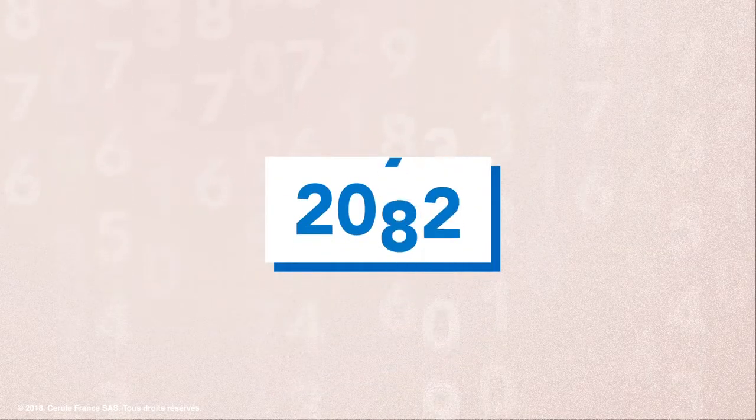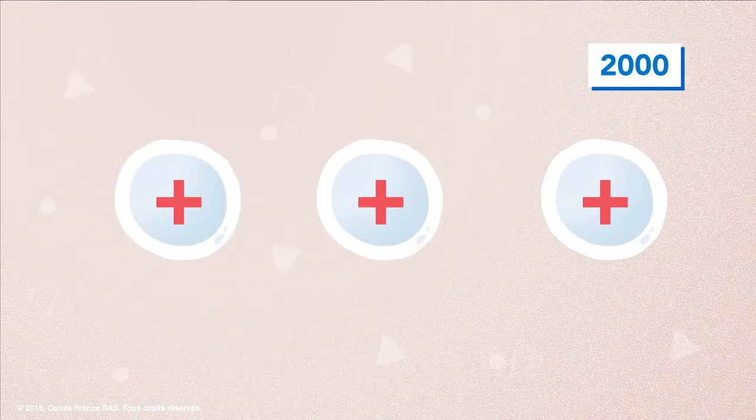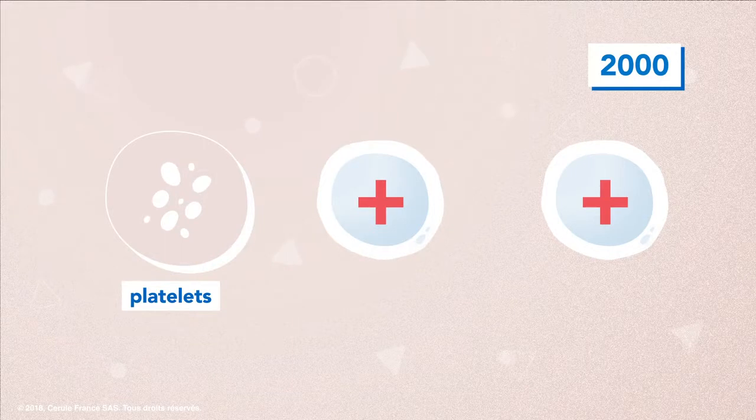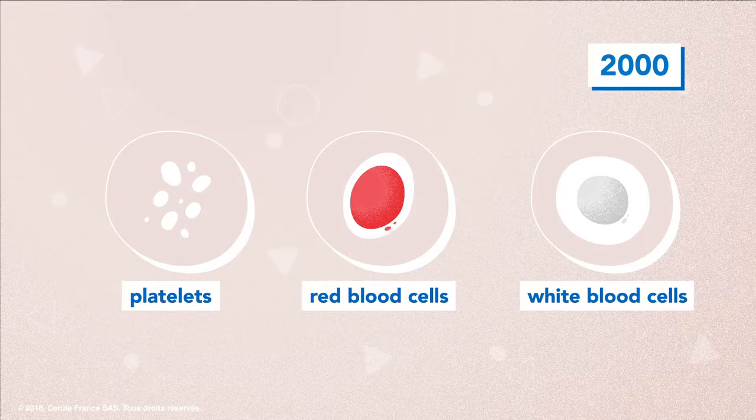Let's talk about the history of scientific studies on stem cells. At the beginning of the century, it was thought that stem cells could only differentiate into specific blood cells such as platelets, red blood cells, or white blood cells.